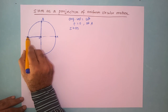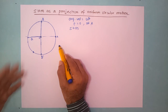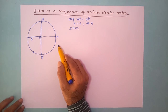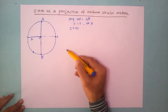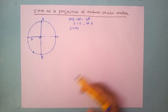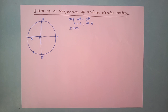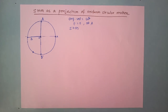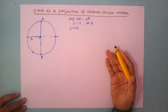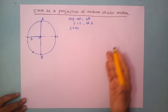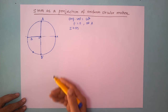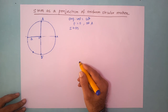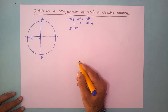Let the radius of this circle be A, where I use the letter A because it represents amplitude. So the motion performed by the projection of a particle performing uniform circular motion is simple harmonic motion — and this can serve as one definition of simple harmonic motion.